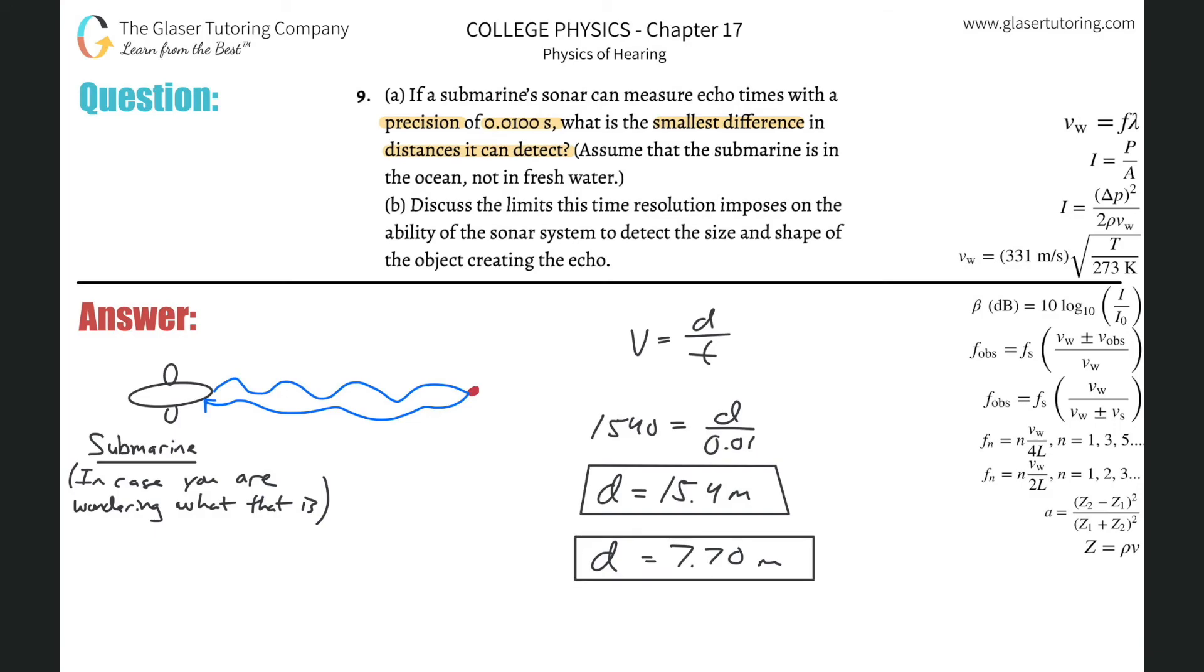Now for part B, what is it saying? It says discuss the limits of this time resolution imposing the ability of the sonar system to detect the size and shape of an object. So essentially, smaller than this, it won't be able to detect it.